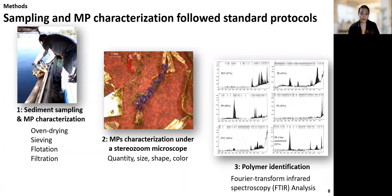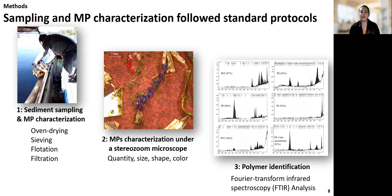We were interested in sediments because these serve as a good representation of long-term MP accumulation. Using an Ekman grab, surface sediments were collected along the river stations and from aquaculture pond stations. In the lab, the samples were oven-dried, subjected to sieving, density separation using sodium iodide, and then filtration. MPs were documented under a Leica EZ4 Stereo Microscope and described in terms of size, shape, and color, and all quantities were recorded. Lastly, polymer types of 24 selected MPs were determined using FTIR, or Fourier Transform Infrared Spectroscopy, at DOST Taguig Laboratory.